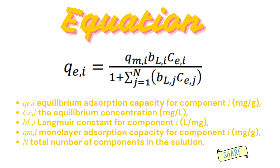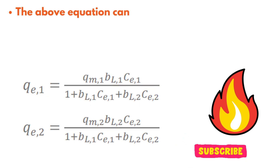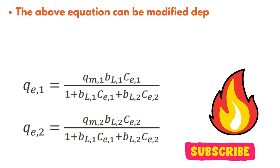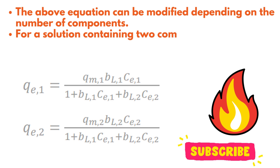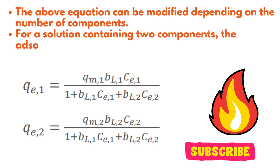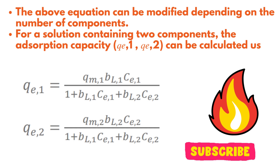For example, for a bi-component system, N is 2. The above equation can be modified depending on the number of components. For a solution containing two components, the adsorption capacities Q_E1 and Q_E2 can be calculated using these two equations.